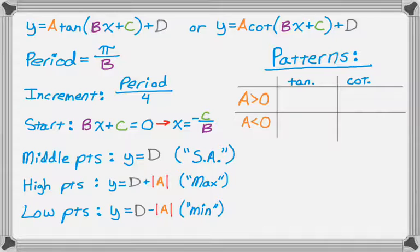Now we need some patterns. There's different patterns for tangent and cotangent, and it's based on whether A is greater than zero or less than zero. So if A is greater than zero, the pattern for a tangent will be middle point, high point, asymptote, low, middle. So starting at the starting point, it's middle, high, asymptote, low, middle. If A is less than zero, it becomes middle, low, asymptote, high, middle.